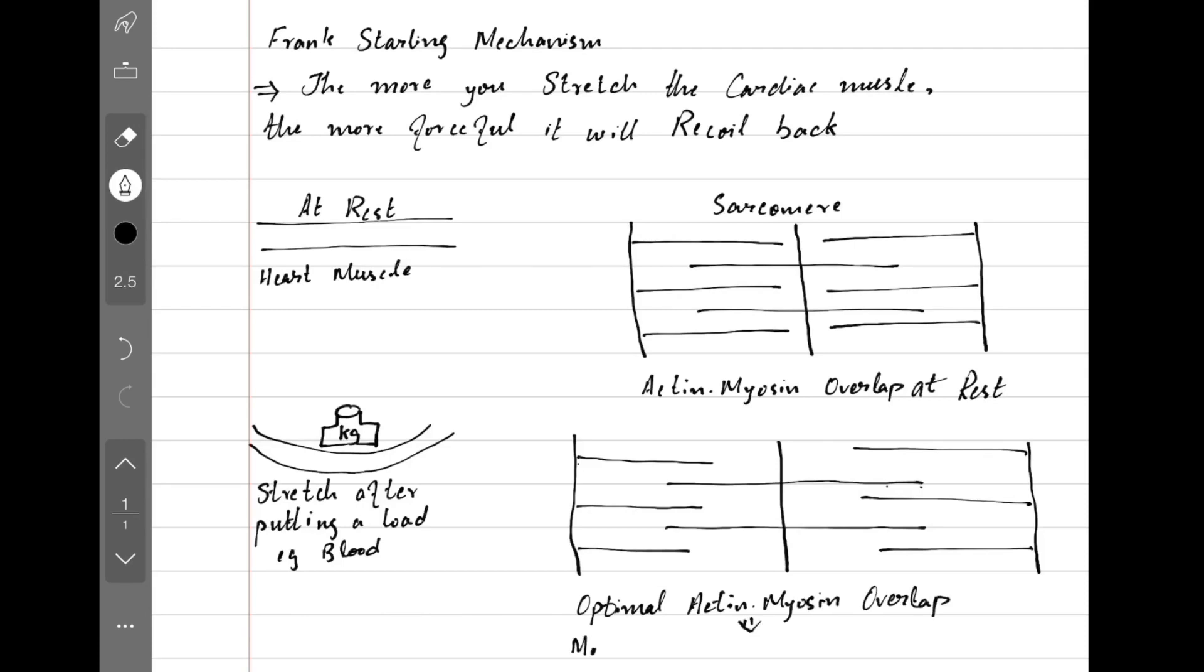This position is the optimal actin-myosin overlap. And once achieved, the muscle will contract back forcefully. We don't need to know what's the optimal actin-myosin overlap position. It's just for reference here to make sense out of it. So think of it as action and reaction of Newton's third law. The more forceful an action is, the more forceful a reaction to that action is.